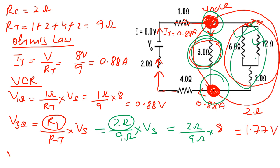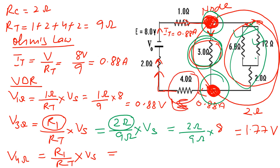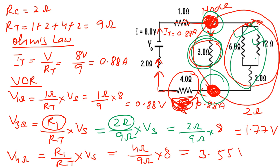For the voltage across the 4 ohm resistor: here there is no other resistor in parallel with the 4 ohm, so we take R1 = 4 ohm directly. V(4Ω) = (4/9) × 8 = 3.55 volt.